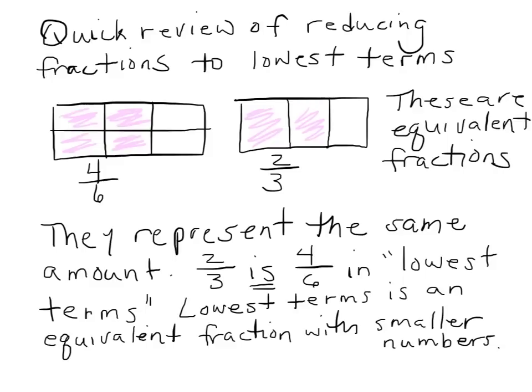A quick review of reducing fractions to lowest terms. Basically, you've been through this before. These are equivalent fractions that we're discussing. You can see that four-sixths is the same as, or is equal to, two-thirds. All it is is representing the same amount. Two-thirds is four-sixths in lowest terms. Lowest terms is an equivalent fraction with just smaller numbers.